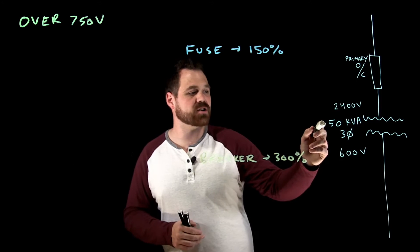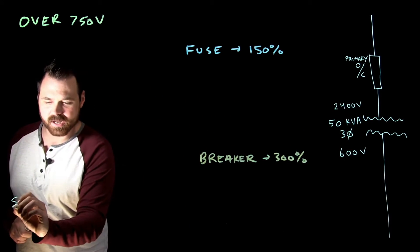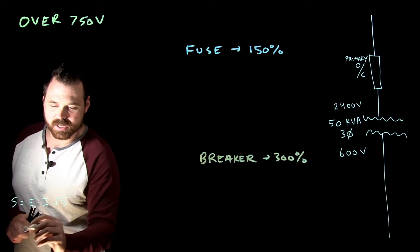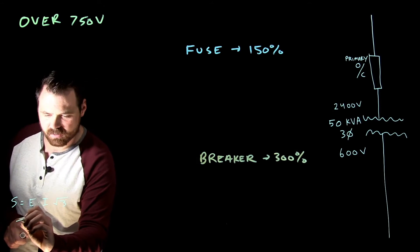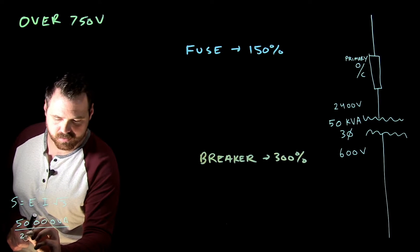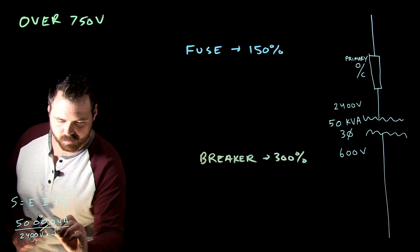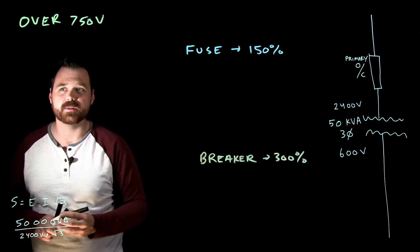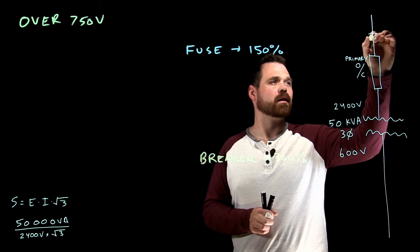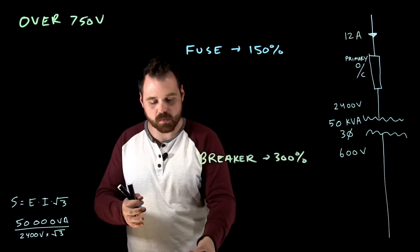So I've got a 50 kVA transformer, it's three-phase, and I'm at 2400 volts. So I'm going to take my formula S equals E times I times root three, quickly transpose this. So what this ends up giving me is a primary current here of 12 amps.